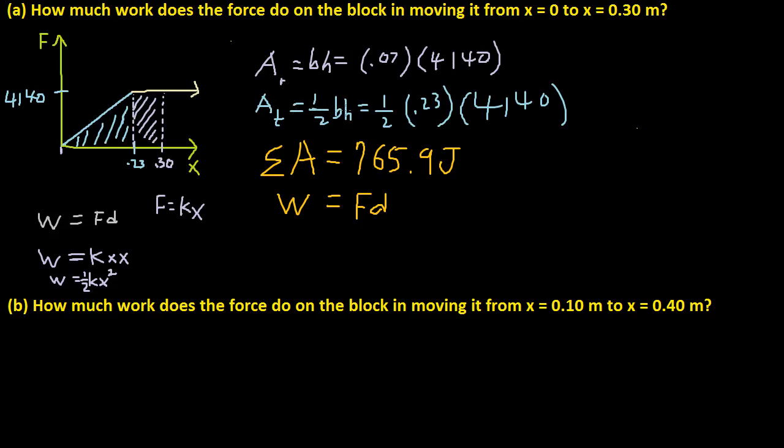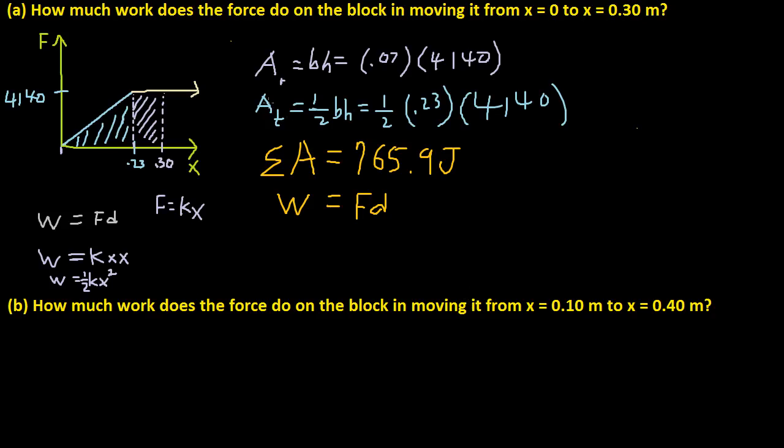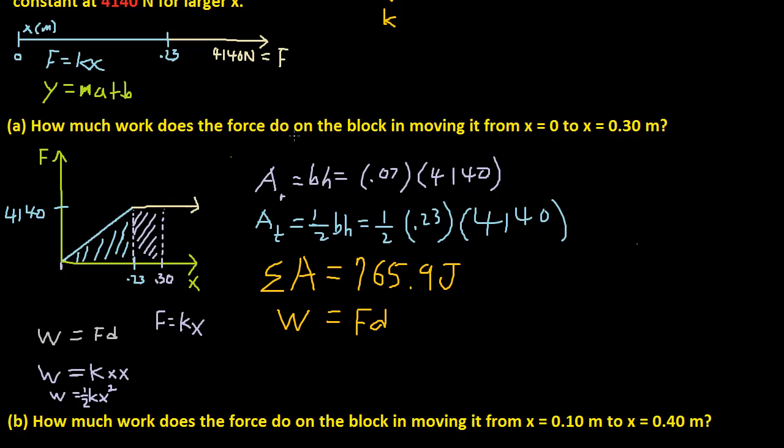So what's base times height? Well, base is basically the x, and height is basically the height, the force. So this is d times f. So f times d, that's work. So 1 half f times d is equal to a, which is work. Does that kind of make sense?